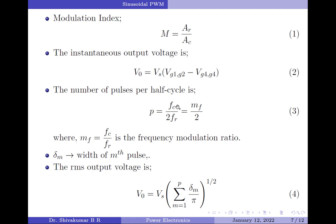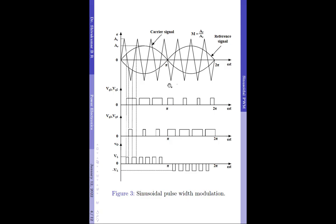Lastly, coming to the mathematical aspect of the discussion: the modulation index is the ratio of the reference signal amplitude AR to the carrier signal amplitude AC. The instantaneous output voltage is obtained as V0 equals VS multiplied by (VG1G2 minus VG3G4), where VS is the supply voltage. Please note the correction: this is VG3G4. We are referring to the waveforms — this is VG1G2 and this is VG3G4.